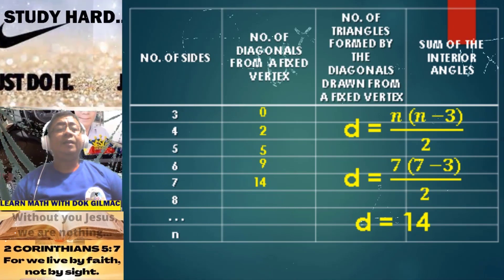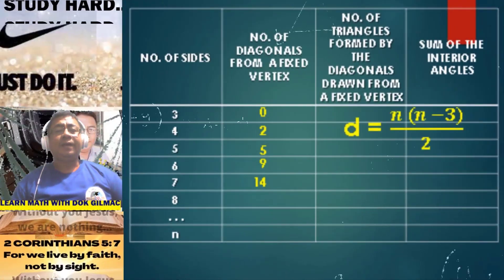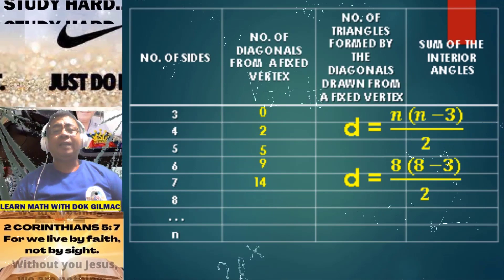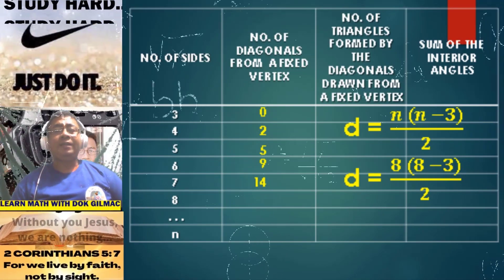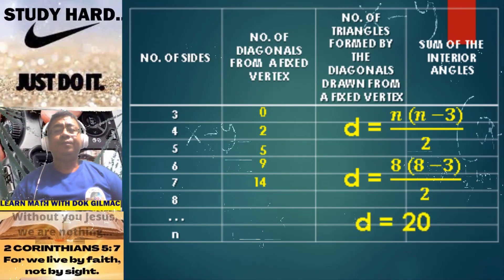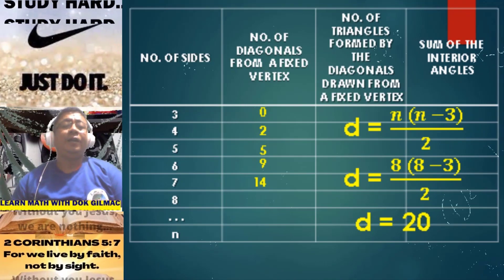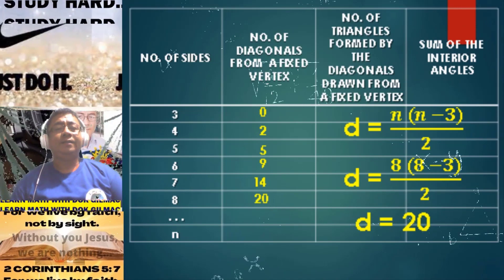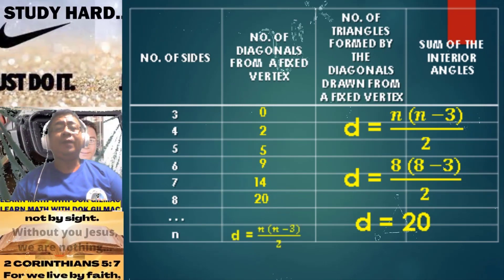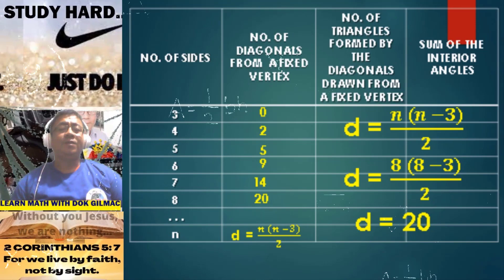Let's have the octagon — an octagon has 8 sides. Using the same formula, substitute N equal to 8: we have 8 times (8 minus 3) all over 2, which is 8 times 5, which is 40 divided by 2, simply equal to 20. The number of diagonals formed for an octagon is 20. For an N-gon, we simply have the formula D = N(N-3)/2. Take note of that.